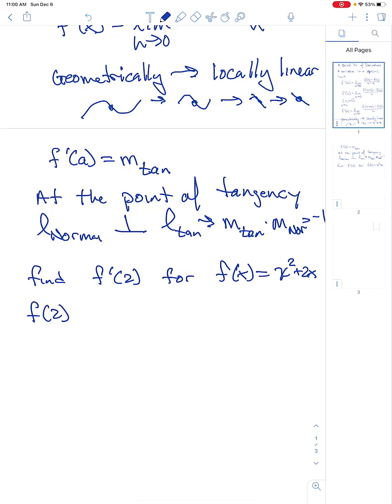Okay, so f of two, because I'm going to use the alternative form, will be two squared plus two times two. Four plus four, that's eight. Now, what I like to do is build the difference quotient slowly.